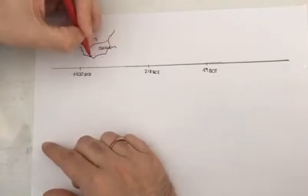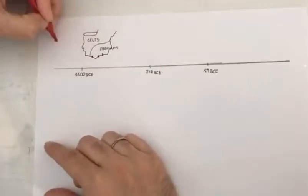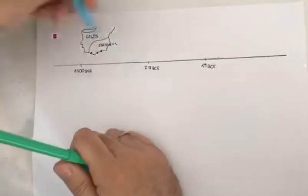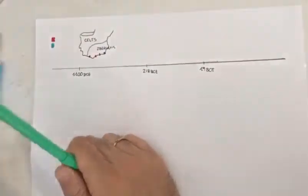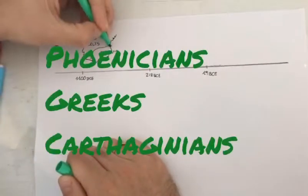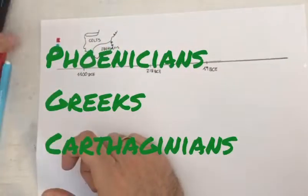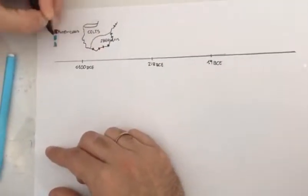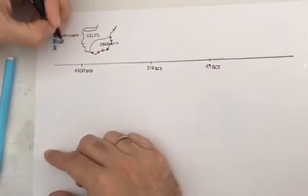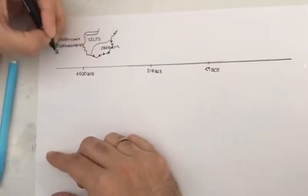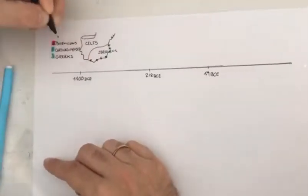But approximately 1100 years before Common Era, some cultures from the Mediterranean Sea started establishing colonies and settlements along the coast of the Iberian Peninsula. There were Phoenicians, the ancient Greeks, and the Carthaginians.